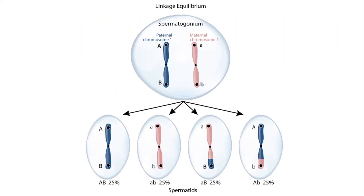This is a figure of linkage equilibrium, which can be found in section 3 of genetics. In the figure illustrating independent assortment we could see two sets of homologous chromosomes, chromosomes 1 and 2. In this figure, however, we can only see one set of homologous chromosomes — the paternal chromosome 1 and the maternal chromosome 1. Notice that the alleles Big A and Big B are now on the same chromosome rather than separate chromosomes. Linkage equilibrium refers to alleles on the same chromosome. You might think Big A and Big B would always be inherited together, but this is not true and can be explained by recombination. During meiosis, segments of the chromosomes break and are transferred to the homologous chromosome.